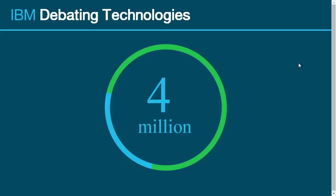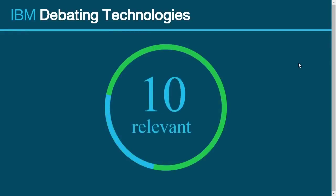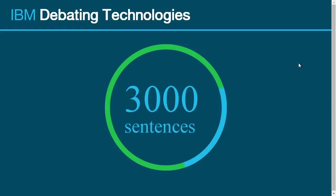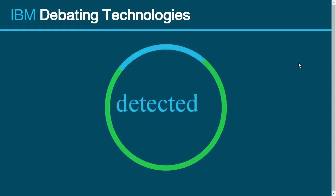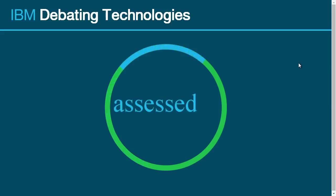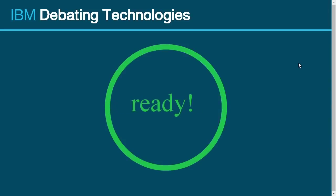Scanned approximately 4 million Wikipedia articles. Returning 10 most relevant articles. Scanned all 3,000 sentences in top 10 articles. Detected sentences which contain candidate claims. Identified borders of candidate claims. Assessed pro and con polarity of candidate claims. Constructed demo speech with top claim predictions. Ready to deliver.